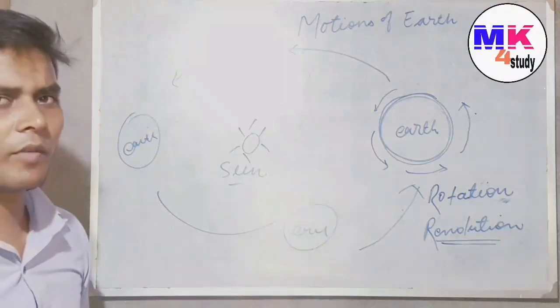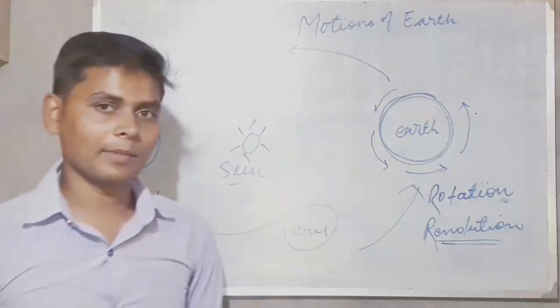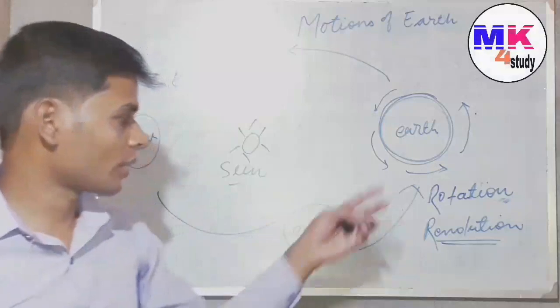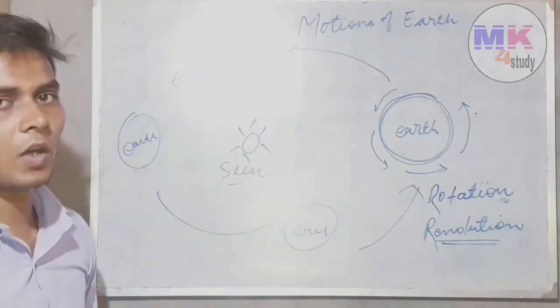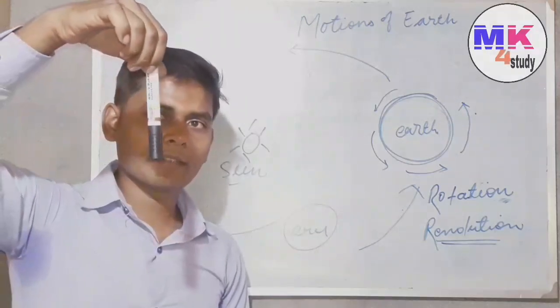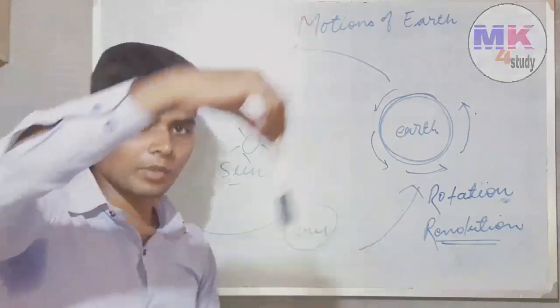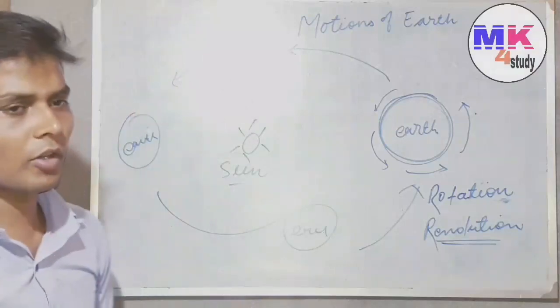So what is the difference between rotation and revolution? Rotation means when something rotates or moves in its axis, it's called rotation. When something moves around some another thing, then it's called revolution. For example, this pen is moving - this is rotation. And when it will move around some another thing, then it's called revolution.